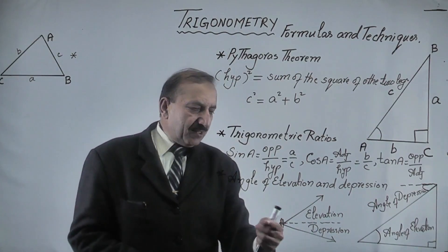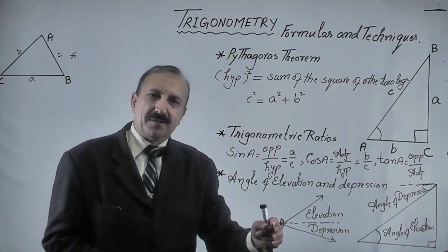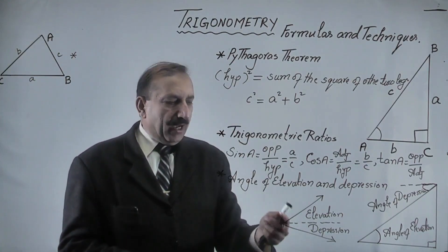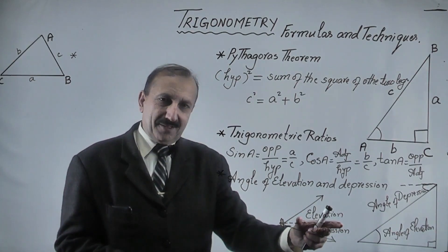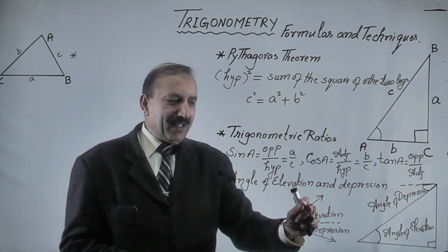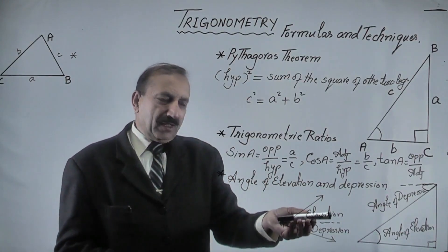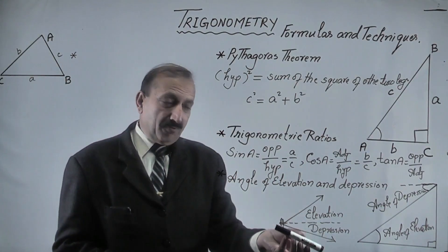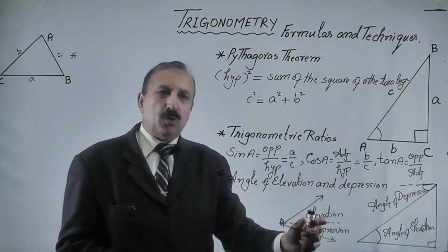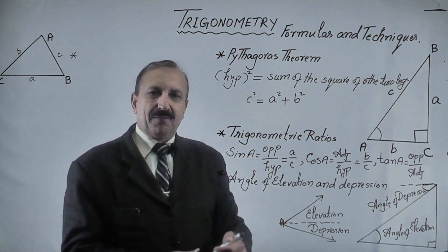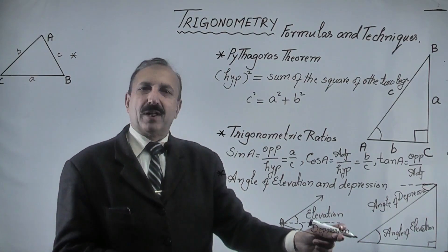If you look here, this is the line of sight, considered to be the horizontal line. This dotted line is the horizontal line at any level. Any line going above this horizontal line defines the angle of elevation. And from the level of horizontal, if we are looking downward, then this downward line — which is below the horizontal level — makes an angle with the horizontal, and this is called the angle of depression.